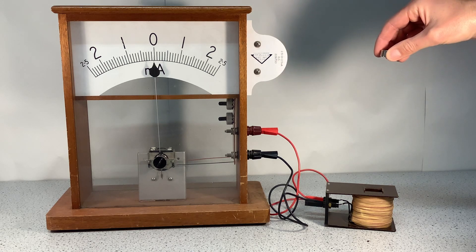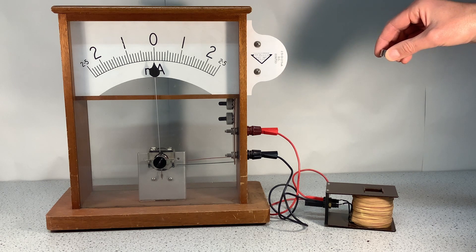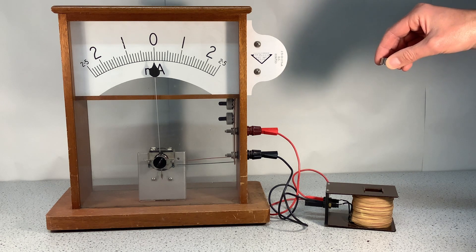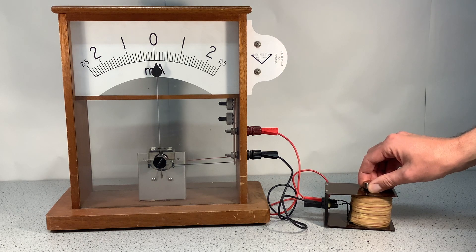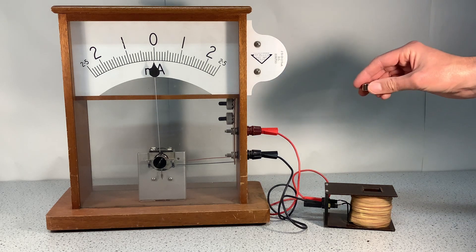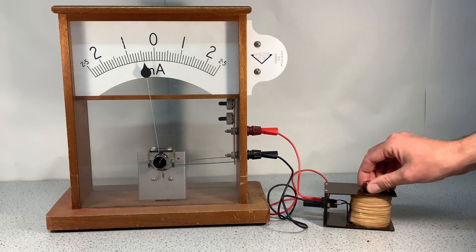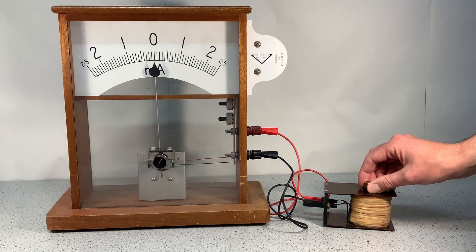The other thing that we can do is change which pole of the magnet we're moving towards the coil. So if I move the north pole towards the coil I get a positive induced potential difference. If I turn the magnet round and move the south pole towards the coil I get a negative induced potential difference which makes the current flow in the opposite direction.